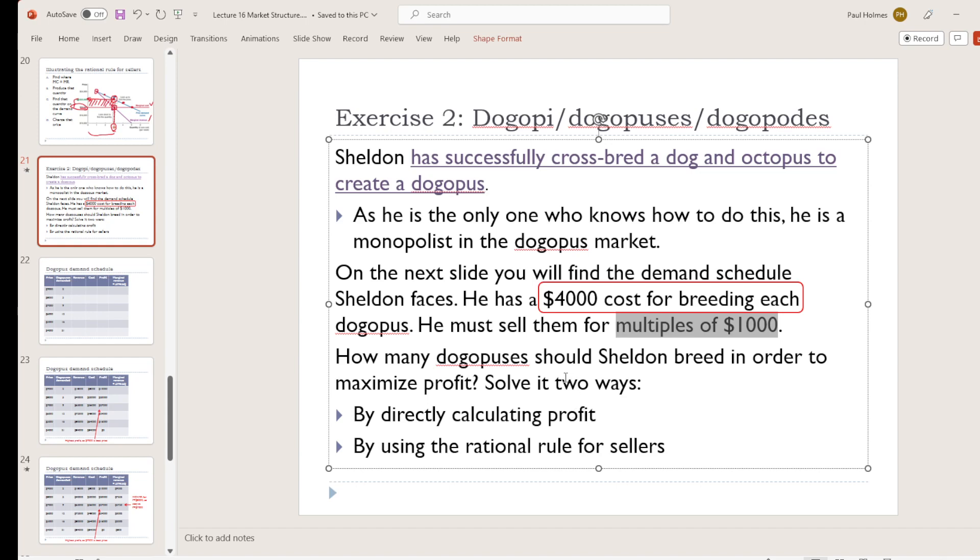We've got a table on the next slide that we're going to fill out and we're going to use that to figure out how many of these Dogopuses we should produce.